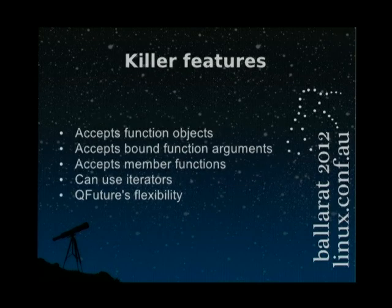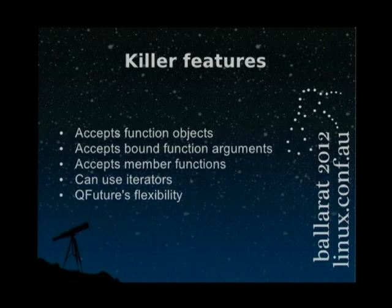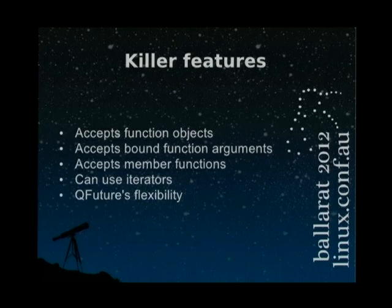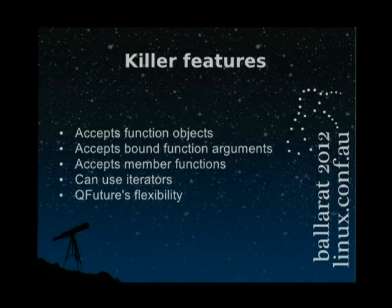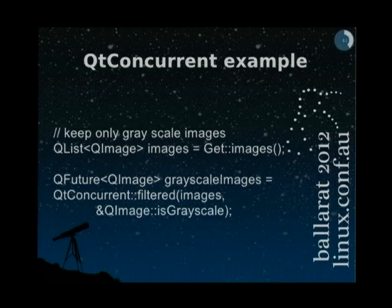What are the killer features? There is much more. QtConcurrent accepts function objects — you can create a function object and pass it instead of a plain function. It accepts bound function arguments, so if you're using boost::bind you can pass that return value and it will be accepted as a function. It accepts member functions, which is very useful when you add creativity to your QtConcurrent magic. You can use iterators instead of passing a list. And most of all, it has QFuture's full flexibility.